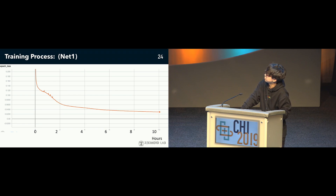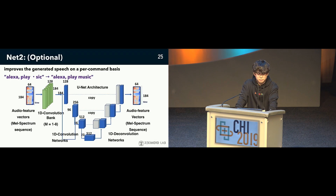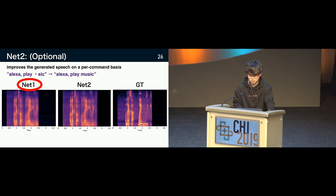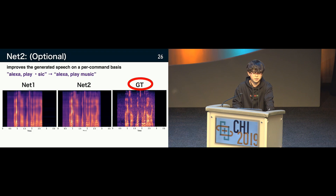Net2 improves the generated speech on a per-command basis. The input is the audio feature vector output from Net1, and the training data is audio feature vectors of the ground truth. This is the difference between the Net1 output and Net2 output. Although the difference is small to the human ear, the probability of Alexa reacting increases.